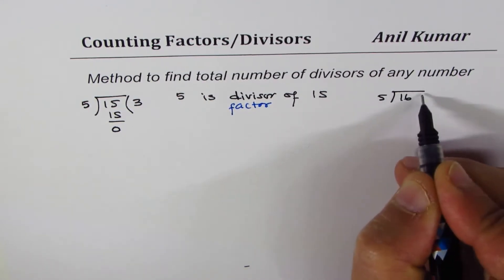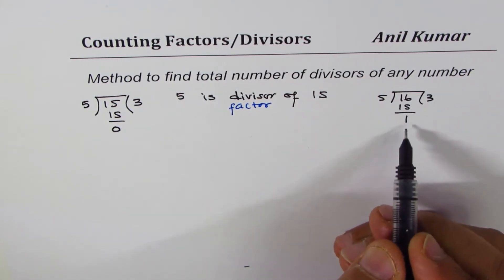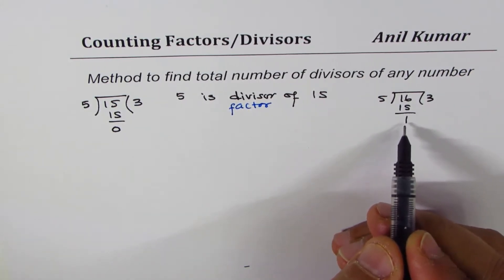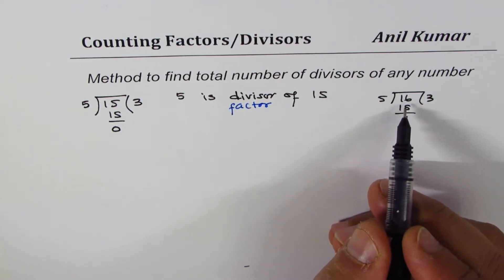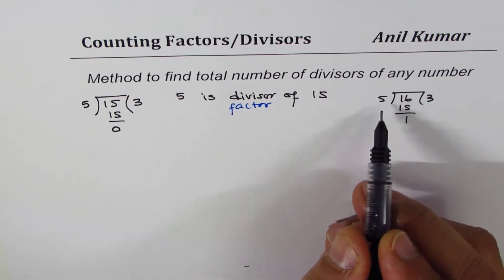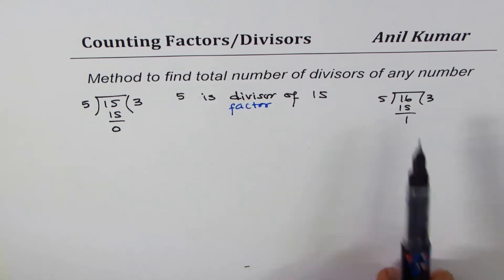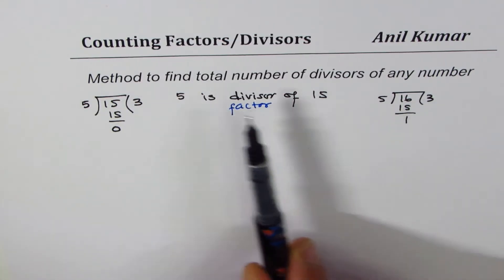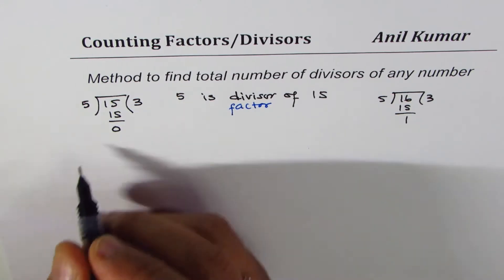On the other hand, if I divide 16 by 5, we get a remainder of 1. If the remainder is not 0, that number is not a divisor. So for 16, the number 5 is not a divisor — 1, 2, 4, 8, and 16 are the divisors of 16. So factors and divisors mean the same thing.